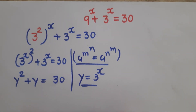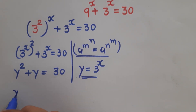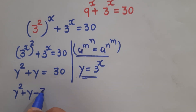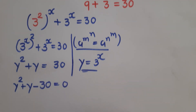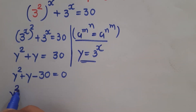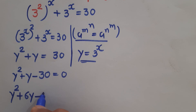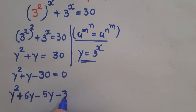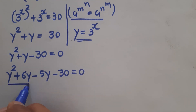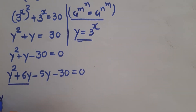Putting 3 to the power x as y, we have y squared plus y is equal to 30. Taking 30 to the left hand side, it becomes negative, so we have y squared plus y minus 30 is equal to zero. Now we need to factorize this properly: y squared plus 6y minus 5y minus 30 equals zero.